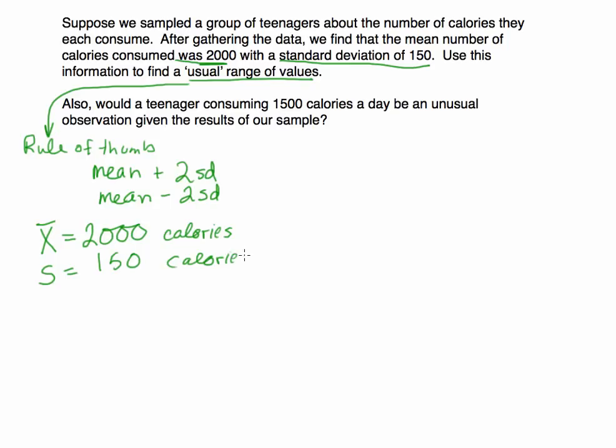So to find a range of usual values, I'm going to take the mean, in this case the mean is x-bar, and I'm going to add two standard deviations, or 2s. So I get 2,000 plus 2 times 150, which, 2 times 150 is 300, this upper limit here will be 2,300.